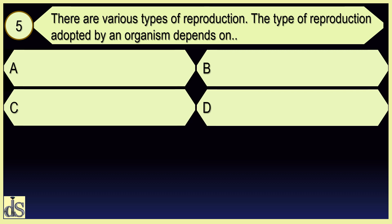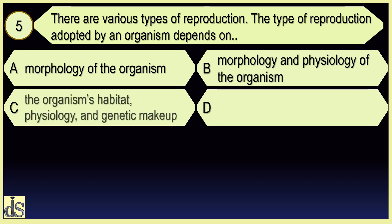There are various types of reproduction. The type of reproduction adopted by an organism depends on the organism's habitat, physiology, and genetic makeup.